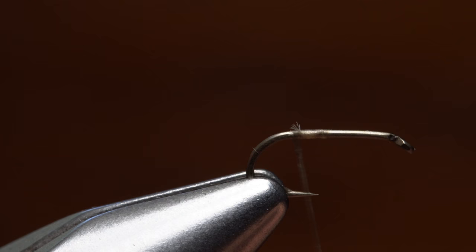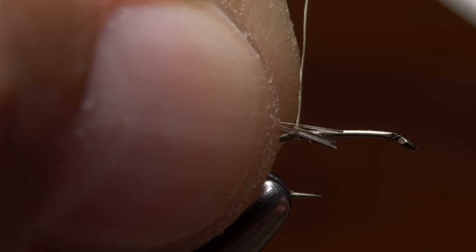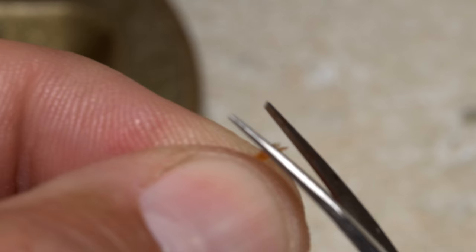Lay the butt ends of the fibers against the near side of the hook as you give your bobbin a gentle counterclockwise spin. Secure the fibers to the shank with just one or two wraps of tying thread. This position is only temporary.